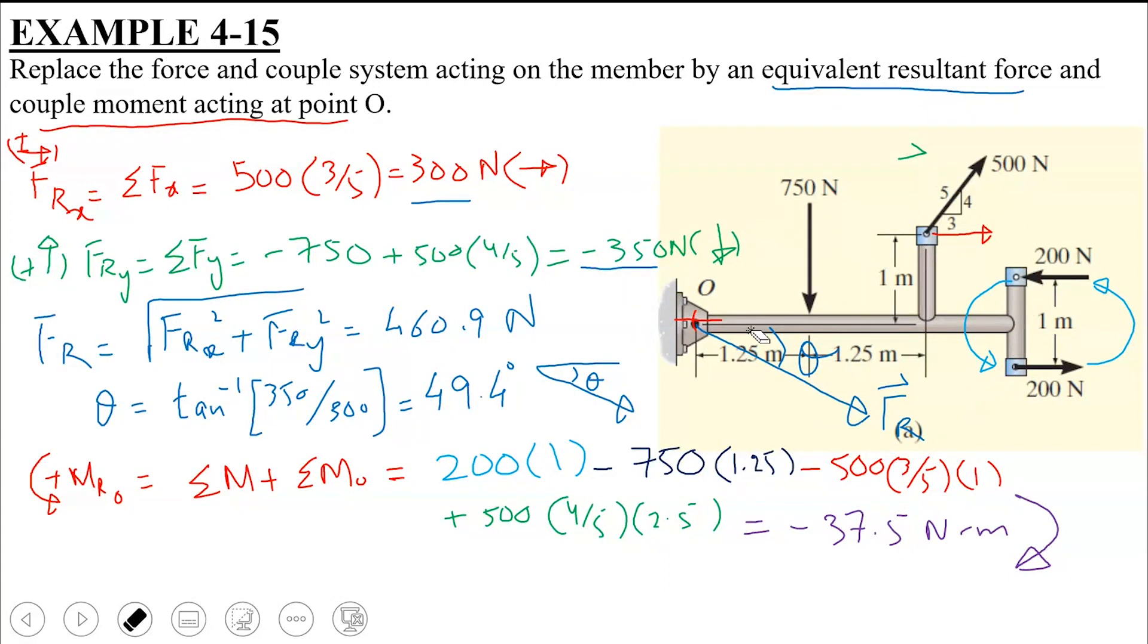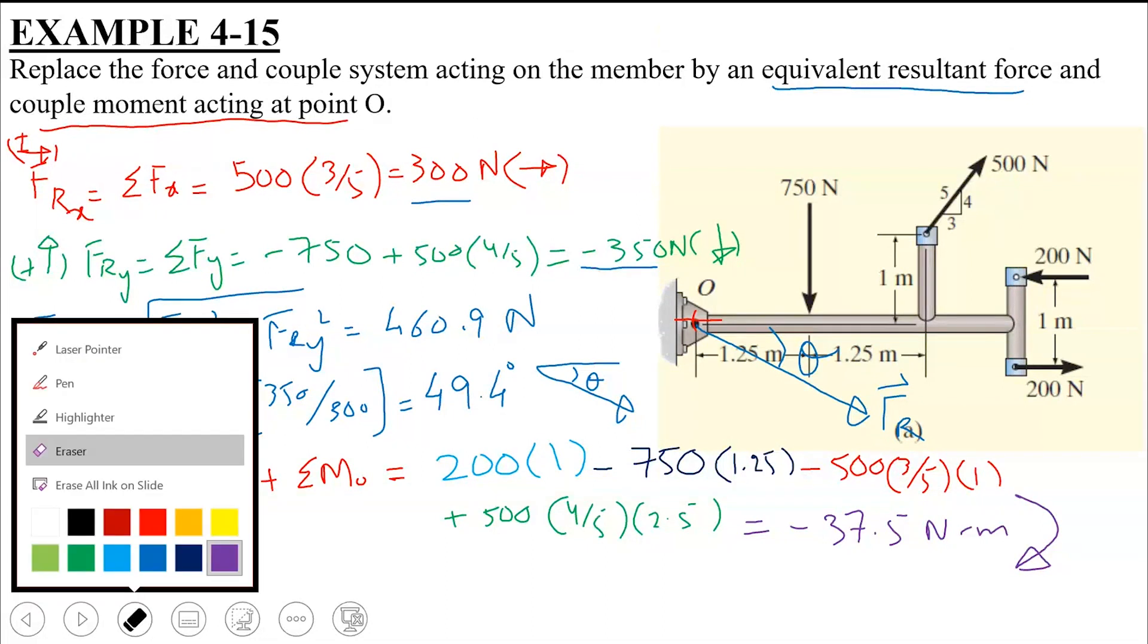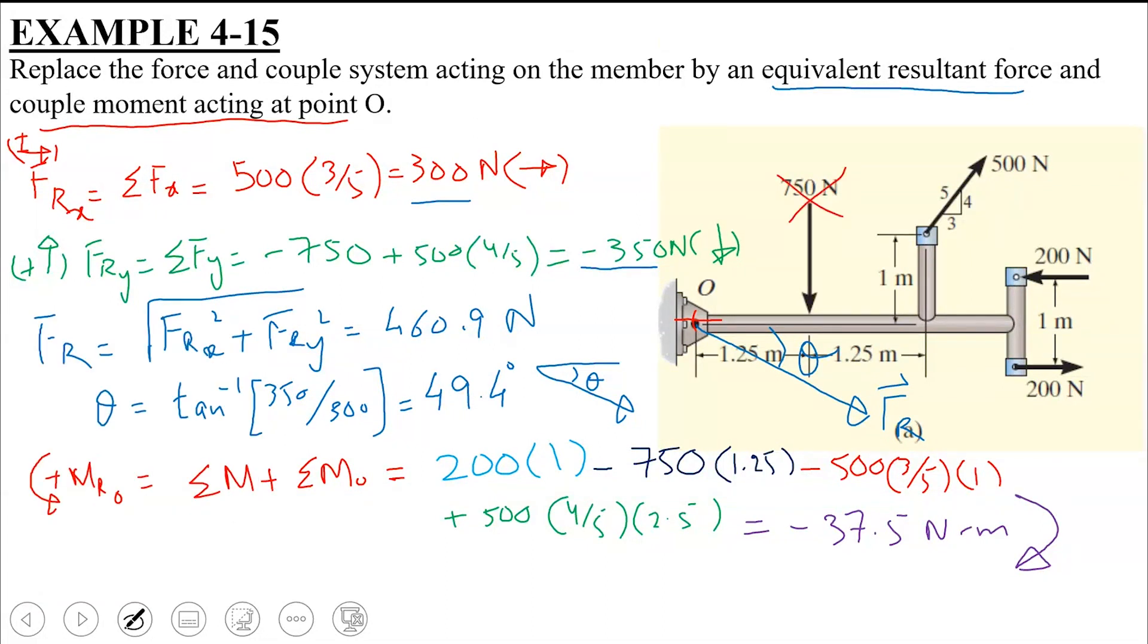Okay. Now, let's see what the purpose of this whole thing is. We have a system in which there are two forces and one couple acting. We have reduced these two forces and couple to a single resultant force and a single resultant couple moment. This single resultant force FR would have a magnitude of 460.9 N at an angle of 49.4 degrees. And MRO is 37.5 Nm in a clockwise direction.